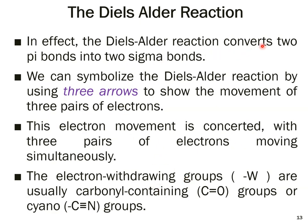In effect, the Diels-Alder reaction converts two pi bonds into two sigma bonds. We can symbolize the reaction using three arrows to show the movement of three pairs of electrons — one for each of the three pi bonds involved. This electron movement is concerted: it is a single step with three pairs of electrons moving simultaneously, with no intermediate involved. Electron-withdrawing groups such as carbonyl-containing groups or cyano groups are commonly used in the Diels-Alder reaction.